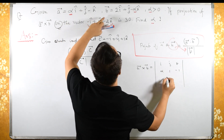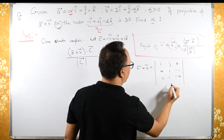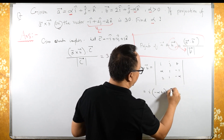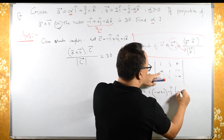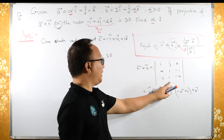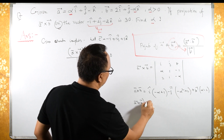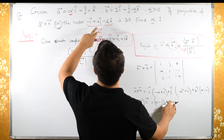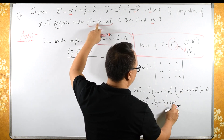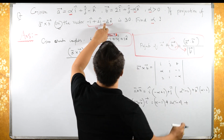So a cross b = |i  j  k; α  1  −1; 2  1  −α|. Expanding: i component is (1·(−α) − (−1)·1) = −α + 1, minus j component is (α·(−α) − (−1)·2) = −α² + 2, plus k component is (α·1 − 1·2) = α − 2.